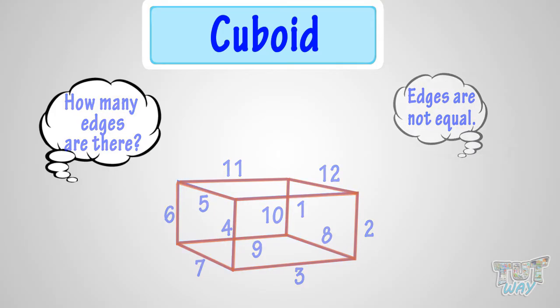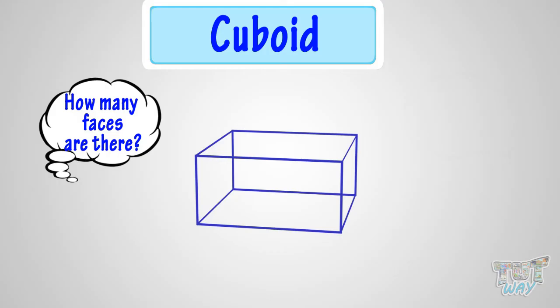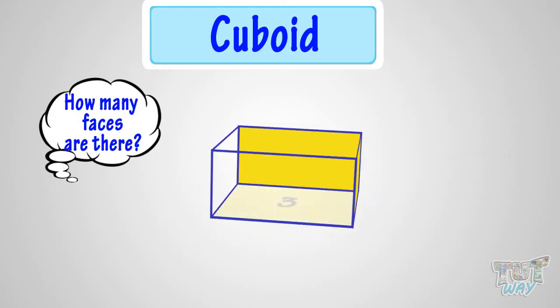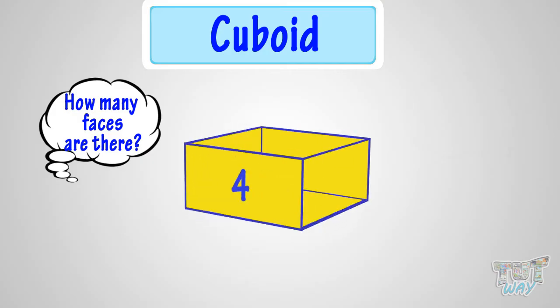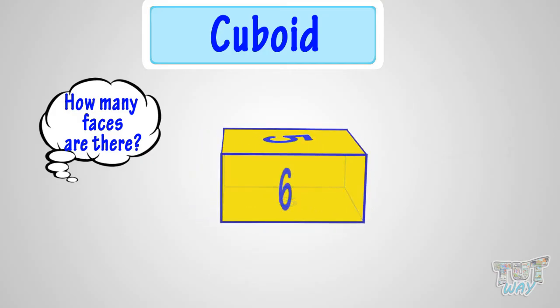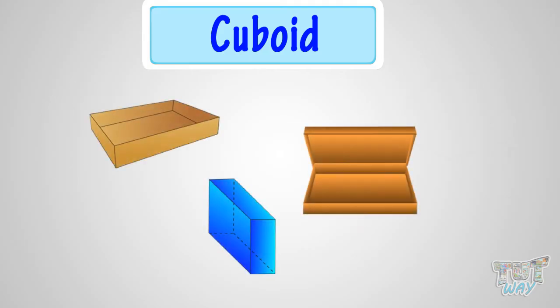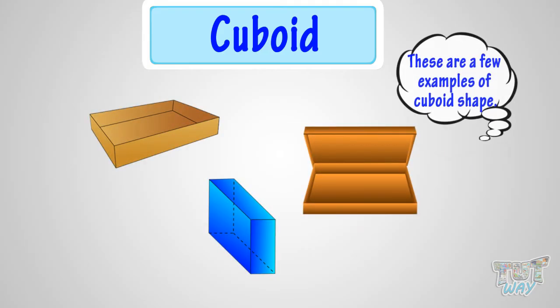Now let's count the faces of a cuboid. 1, 2, 3, 4, 5, 6! So now we know that a cuboid has 6 faces. Can you find more objects like a cuboid in your house? Try to imagine! These are a few objects that have cuboid shape.